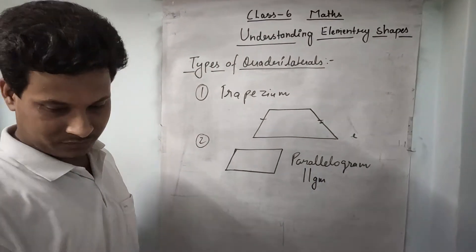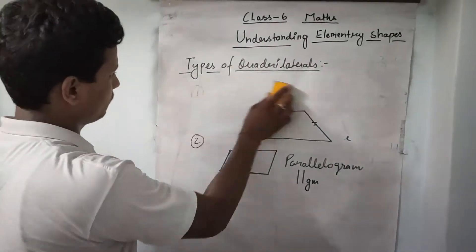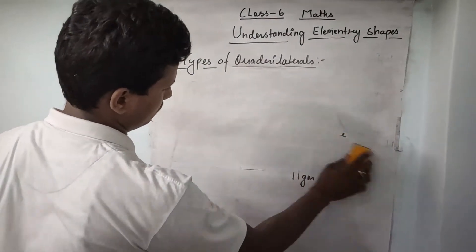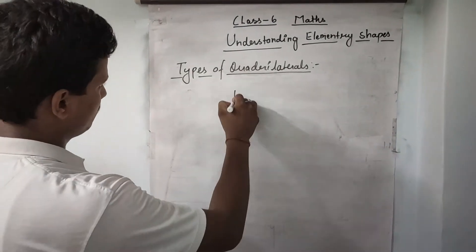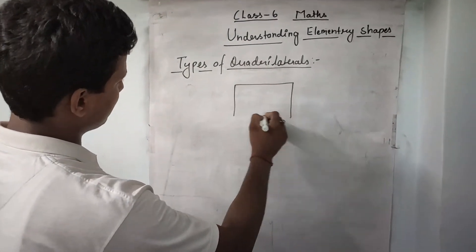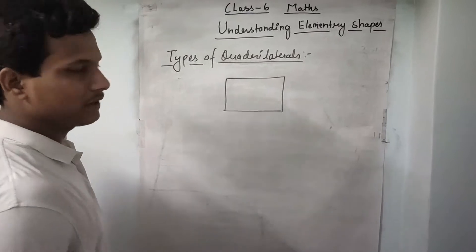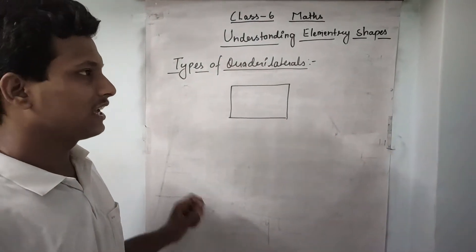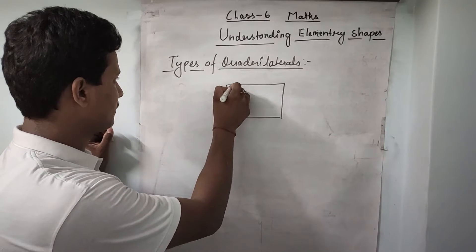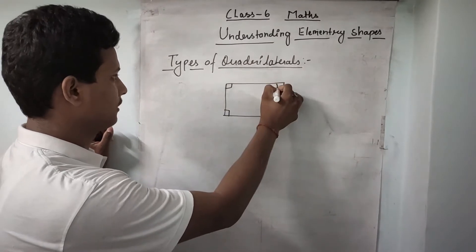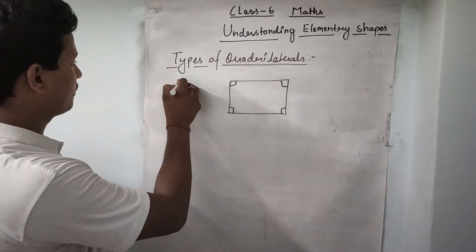The next type is a rectangle. We all know what a rectangle is. Opposite sides are parallel and equal, and all the angles are 90 degrees. So this is called a rectangle.